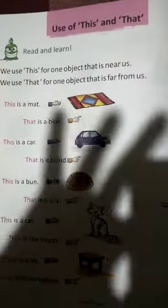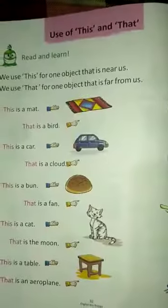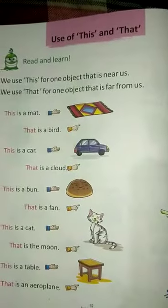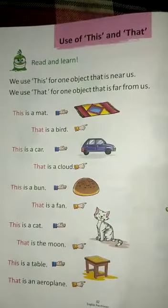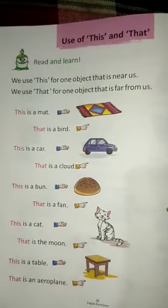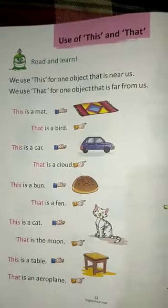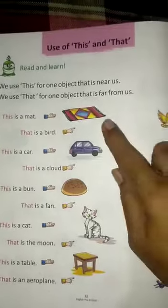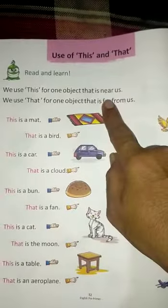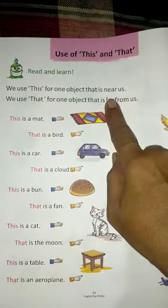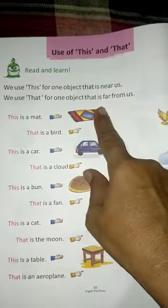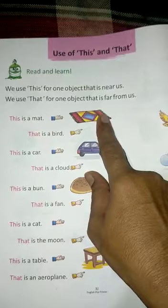Good morning children. Today we will read page number 32 from your book: Use of this and that. We use 'this' for one object that is near us. We use 'that' for one object that is far from us.